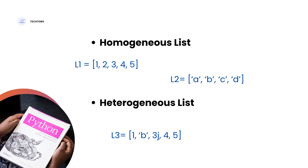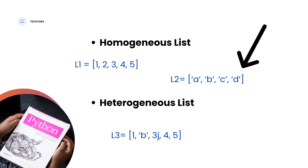We have homogeneous list and heterogeneous list. If you look at L2, L2 is all string data — it is a list of string data types. This is a homogeneous list.